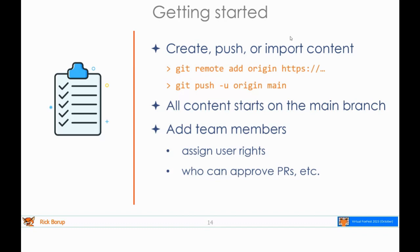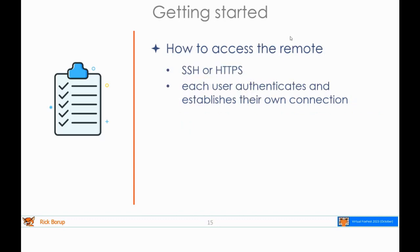All content initially starts on the main branch. Main used to be called the master branch in Git, but it's now most commonly called Main. You'll want to add team members, decide who can access the remote repository, who can push, who can approve pull requests, and so on. Each individual developer also needs to establish credentials for connecting to the remote — typically done either with SSH or with HTTPS. If you'd prefer to interact from the command line, you'll need to set up the public and private key pair for SSH.